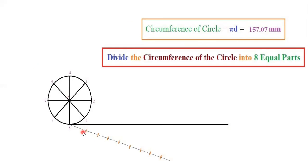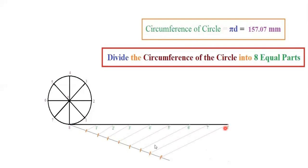Take your compass and set a radius of 10 mm. Place the compass at point 8 and cut an arc. Similarly cut 8 arcs to divide the inclined line into 8 equal parts. Then join the last arc to the end of the circumference line, and join the other arcs parallel to it — these lines must be very parallel — so the circumference is divided into 8 equal parts. Name them 1-dash, 2-dash, 3-dash and so on.